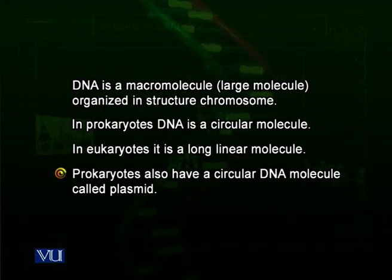Prokaryotes also have another form of DNA outside their nucleoid region, present inside the cytoplasm — small circular DNA molecules called plasmids. The prokaryotic chromosome carries genes for regulation of growth, control, and development. Plasmids, which are extra-nucleoid circular DNA molecules, do not carry essential genes, but they carry genes for resistance to antibiotics, salinity, or extreme environmental conditions. So plasmids give an extra advantage to prokaryotes — particularly bacteria — to cope with extreme environments.